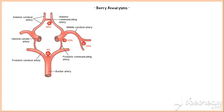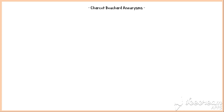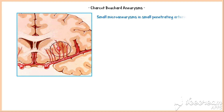Inherited berry aneurysms of the brain are the commonest type of cerebral aneurysms, and they are commonly found in the anterior circulation of the circle of Willis. They are saccular in shape, and rupture of these aneurysms results in bleeding into the subarachnoid space. There is another type called Charcot-Bouchard aneurysms, which are small micro-aneurysms that occur in the small penetrating arteries of the brain. Hypertension is the most common cause, and rupture can lead to intracerebral hemorrhage.